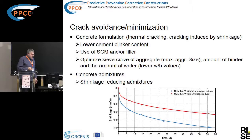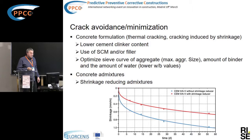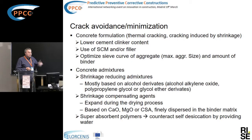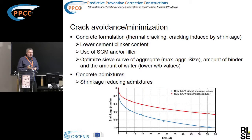There also exist concrete admixtures which limit shrinkage and thus reduce the possibility of cracking — these are called shrinkage-reducing admixtures. They are usually based on alcohol derivatives and are mixed into the concrete during preparation. They work at a very early age and are effective for plastic shrinkage and autogenous shrinkage, but also work over longer time periods on drying shrinkage.